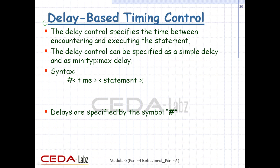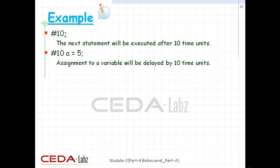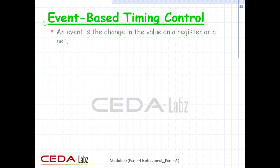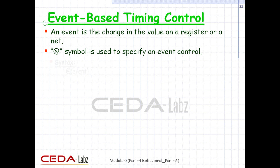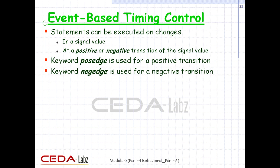The syntax for delay-based timing control is shown here. Delays are specified by the symbol hash '#' and it denotes 'wait for'. In the first example, a semicolon on its own means the next line will be executed after a 10 time unit delay. In the next example, A will be assigned value 5 after a delay of 10 time units. An event is the change in value on a register or net. Events can trigger execution of a statement or block on changes in signal value or transition of the clock. The symbol '@' is used to specify event control. Statements can be executed on a positive or negative transition of the signal, using keywords posedge and negedge respectively.